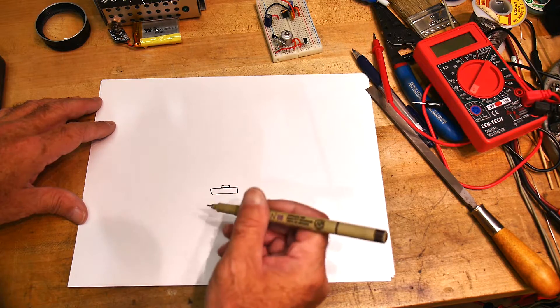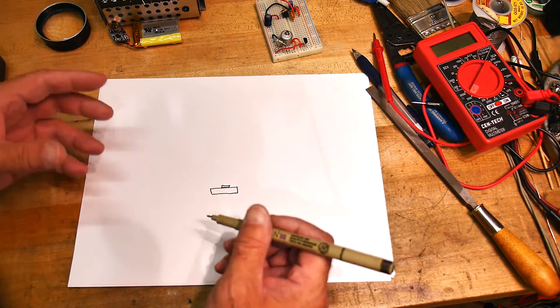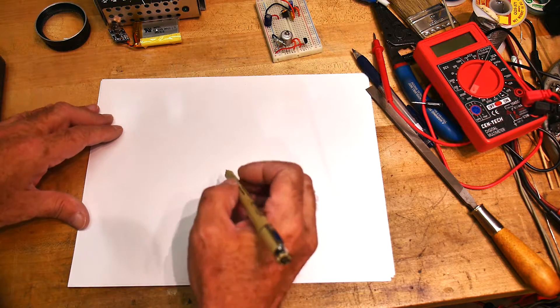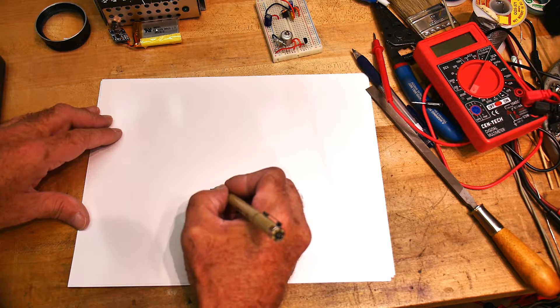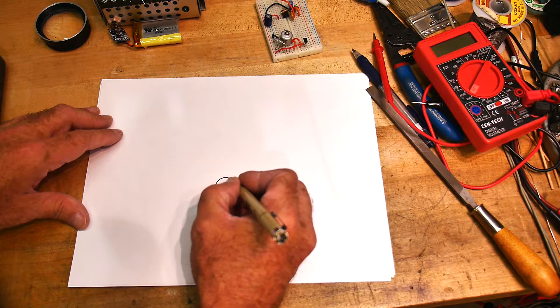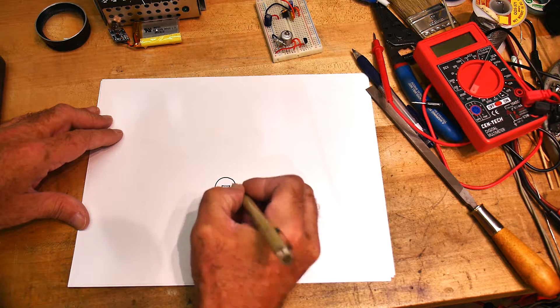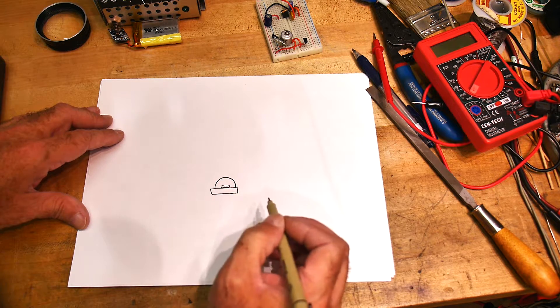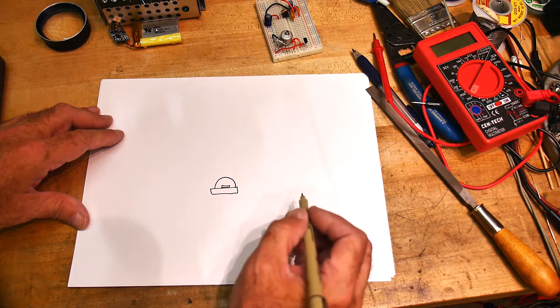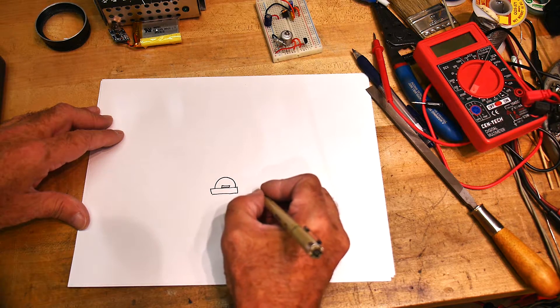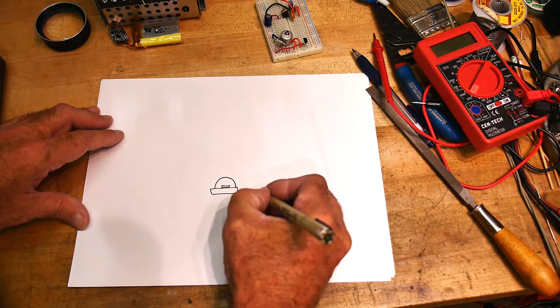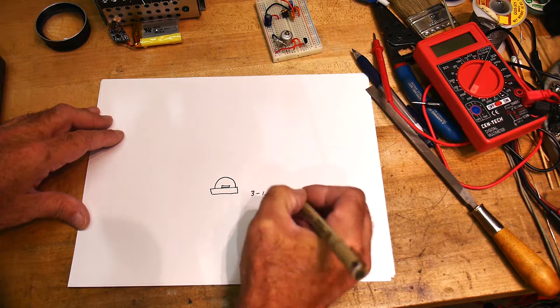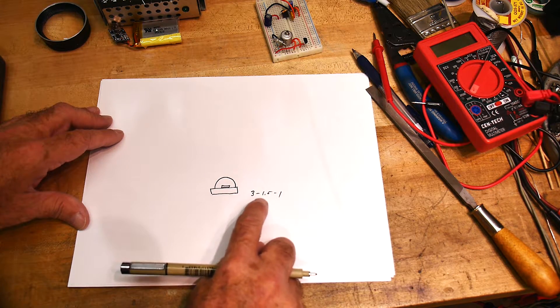So you want to coax the photons out, and so what they do is they put a blob of epoxy over the LED that has an index of 1.5. So you're going from 3 to 1.5 to 1—there's an intermediary step, and that helps get the light out.